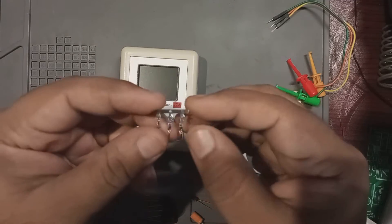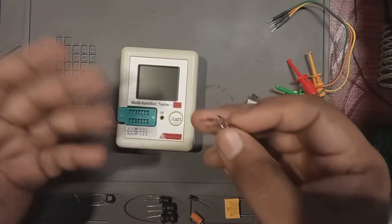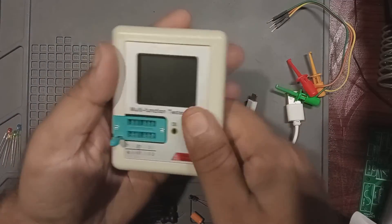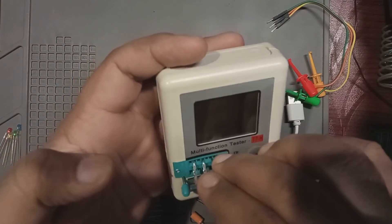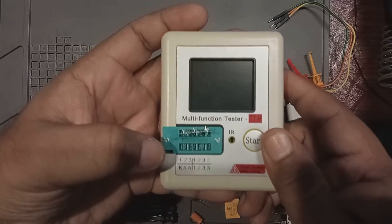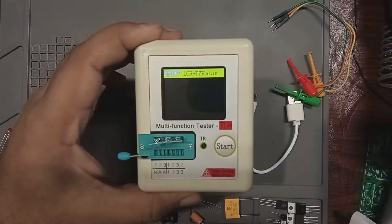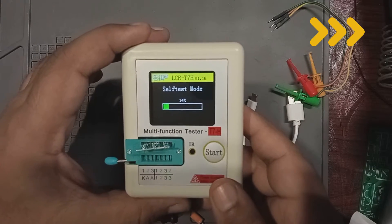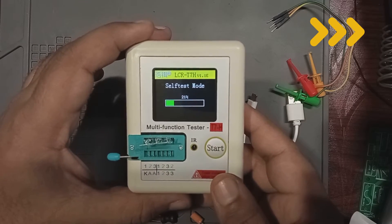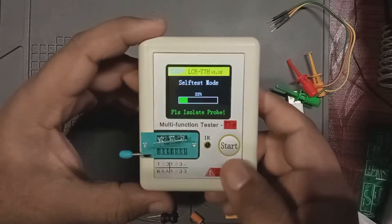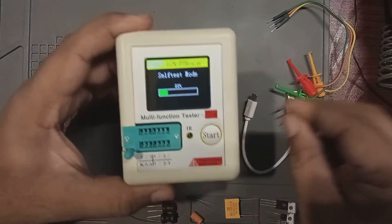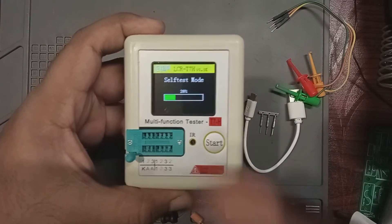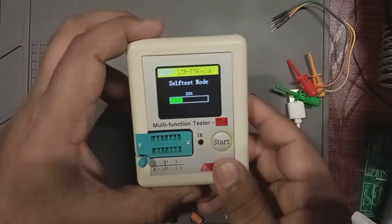Additionally, there's a jumper shunt for self-testing. To initialize the self-test mode, ensure the lever is in the raised position. Attach the jumper shunt to pins 1, 2 and 3. Lower the lever, press the start button, the device will prompt you to isolate the probe.